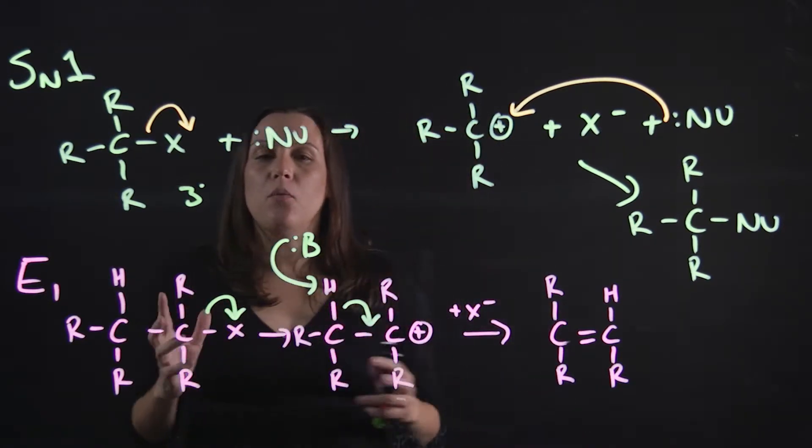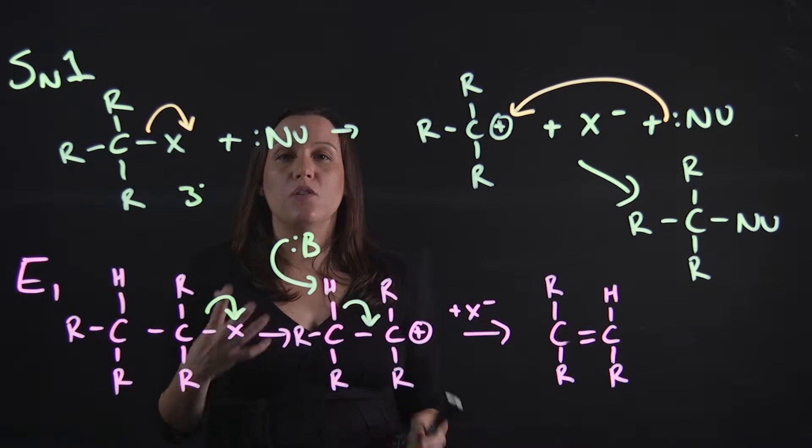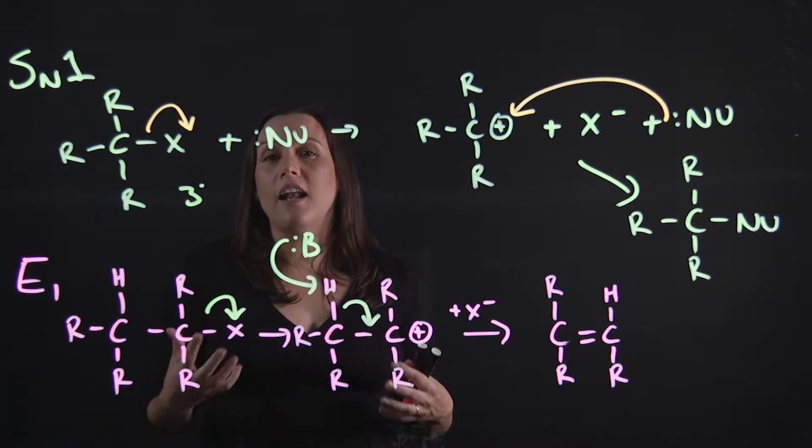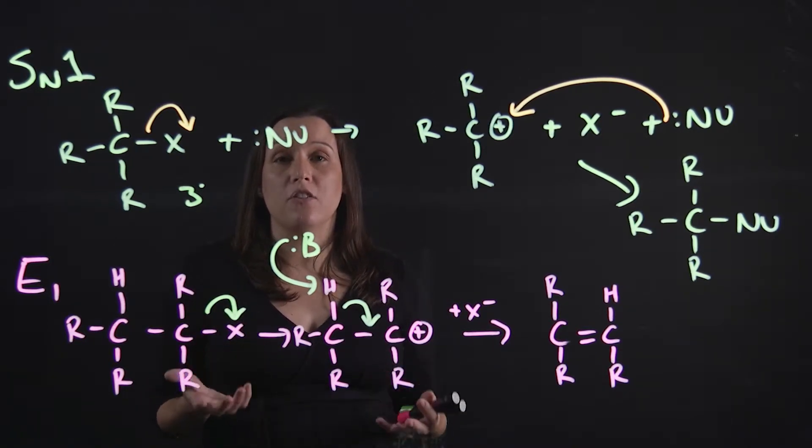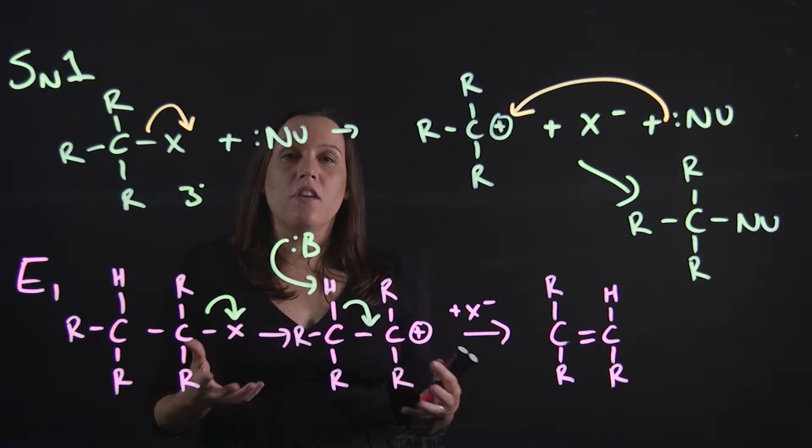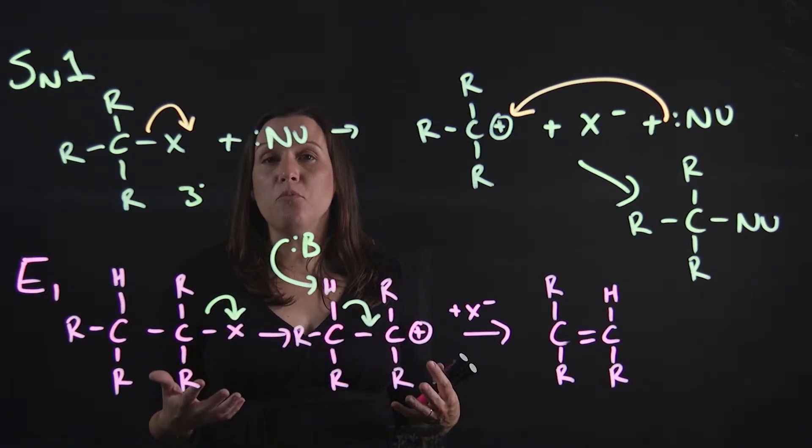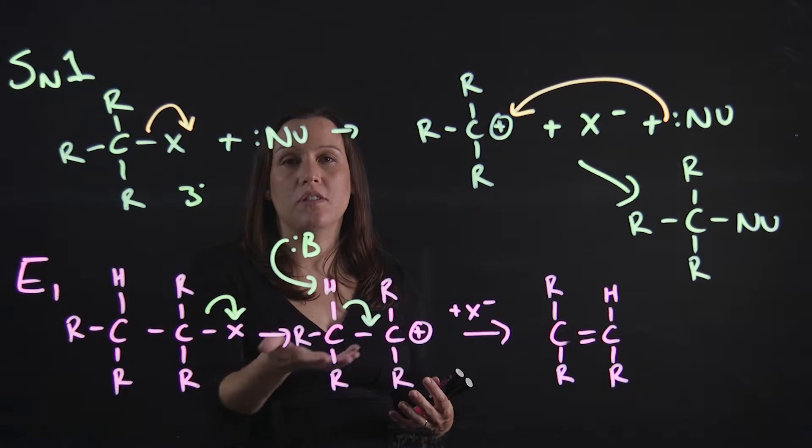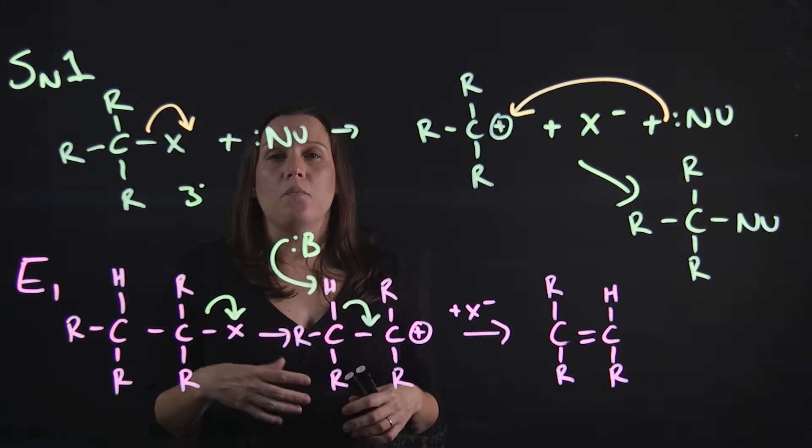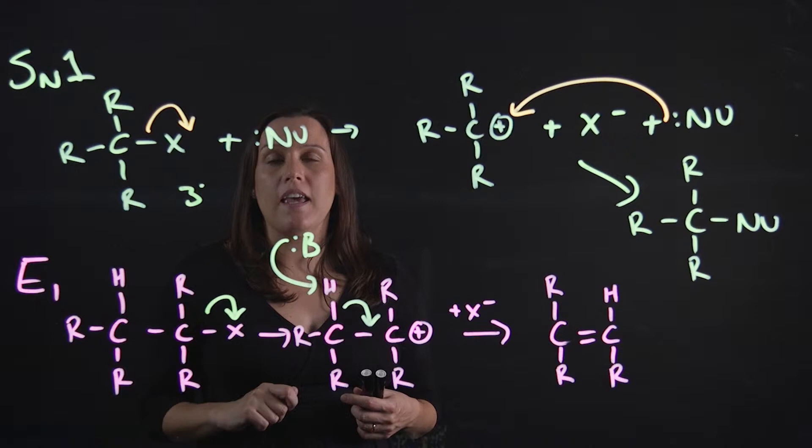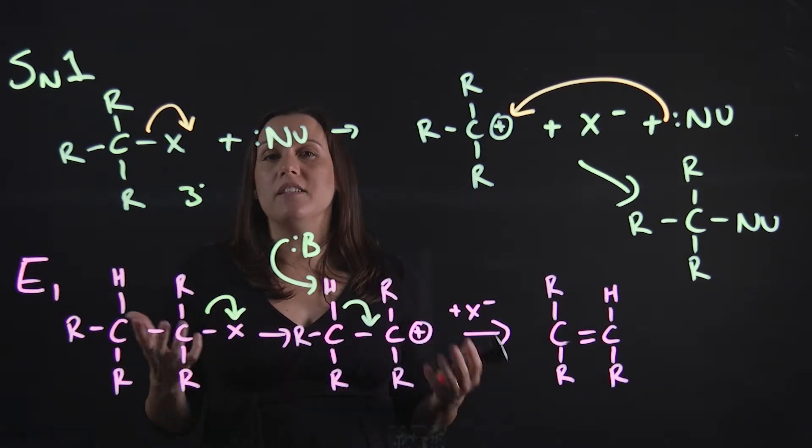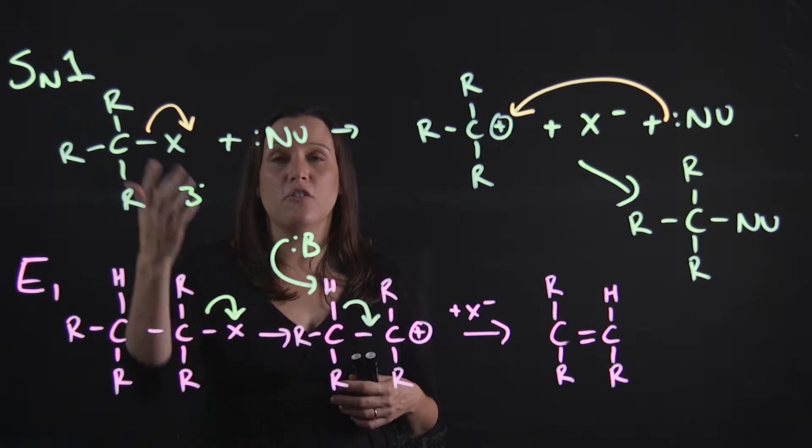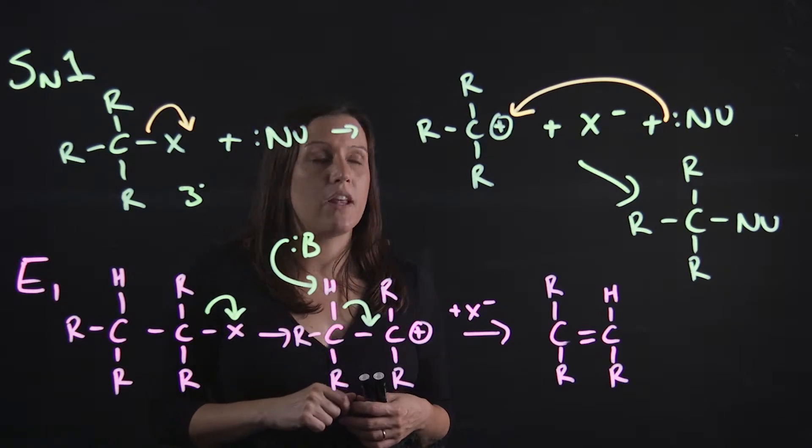To work out which one's in preference between these two is quite difficult, and you can't actually do it unless you experimentally determine it. It's theorized that if you have a higher temperature, then you're going to be forcing it towards that E1 mechanism, but you're still going to get a substantial amount of that SN1. And likewise, if you had no heat in the reaction, you'll possibly get more SN1 in that reaction.